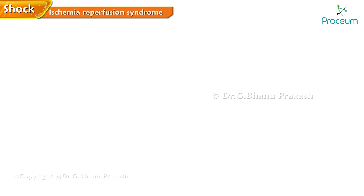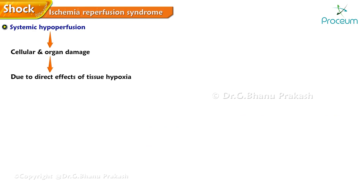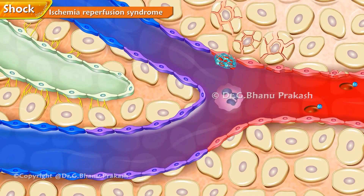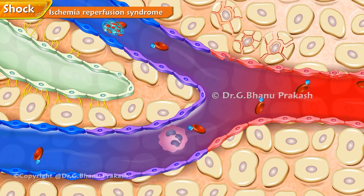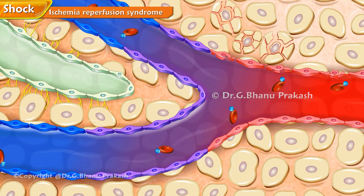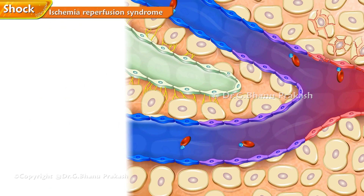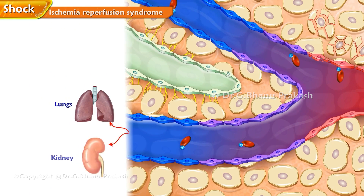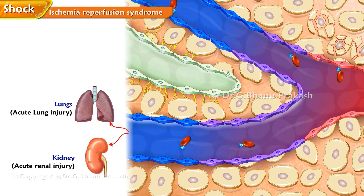Ischemia-reperfusion syndrome: During systemic hypoperfusion, cellular and organ damage progresses due to the direct effects of tissue hypoxia and local activation of inflammation. When normal circulation returns, cellular and humoral elements activated by hypoxia — complement, neutrophils, and microvascular thrombi — are flushed back into the circulation, causing further endothelial injury to organs such as the lungs and kidneys. This leads to acute lung injury, acute renal injury, multiple organ failure, and death.